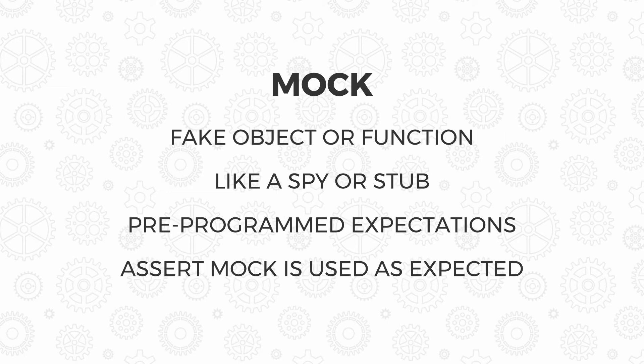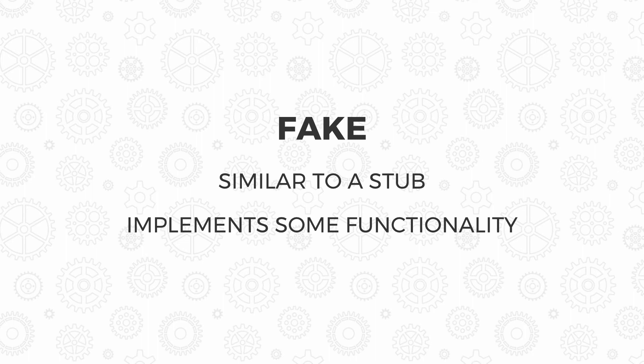Then we've got a mock. Mocks are also fake objects and they're a bit like spies or stubs, but the difference is you pre-program the expectations of what you expect to happen with that function or object. You then assert that the mock is used as you expect — it calls all the functions with the values you expect. Finally, we've got a fake. A fake object is very similar to a stub, but it may implement some functionality, like using an in-memory data store instead of a production database — it just fakes that object.